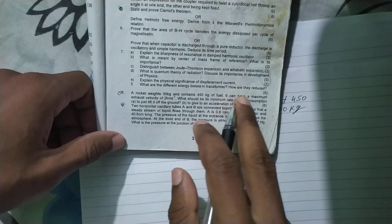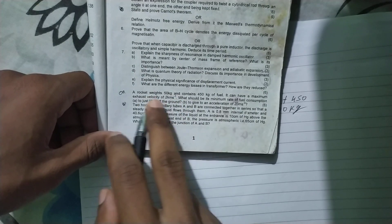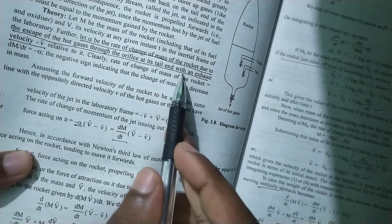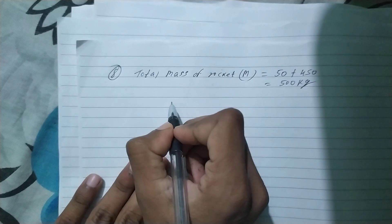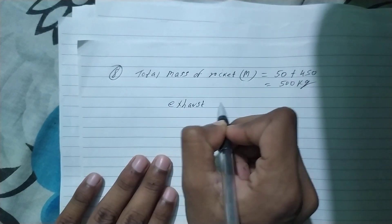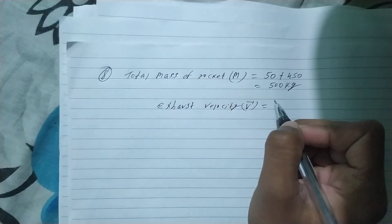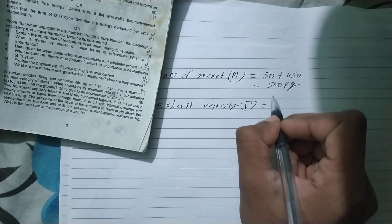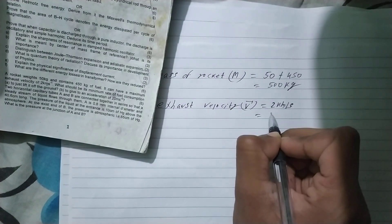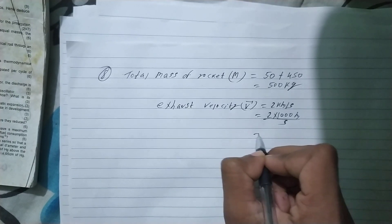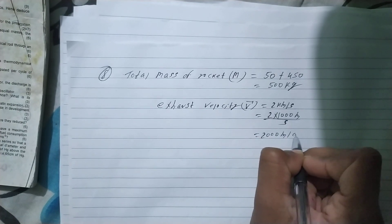It can have a maximum exhaust velocity of 2 kilometers per second. We know the SI unit of velocity is meters per second, so we convert: the exhaust velocity becomes 2000 meters per second.